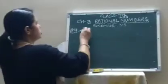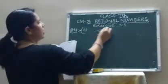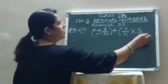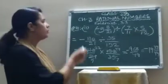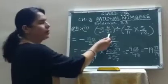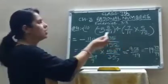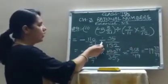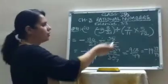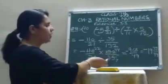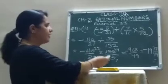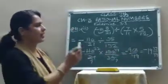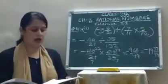Second part of question 11: minus 5 whole number 5 upon 21 divided by bracket 7 upon 11 multiplied by 5 upon 12. Convert to improper fraction. Solve inside the bracket: 7 fives are 35 and 11 into 12 is 132. Perform the division by changing to multiply and taking the reciprocal, giving minus 112 upon 21 multiplied by 132 upon 35. After cancelling, it becomes minus 968 upon 49, which converts to minus 19 whole number 37 upon 49. This is the answer.